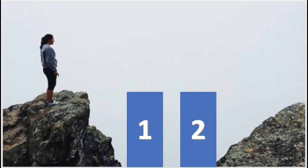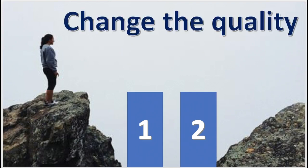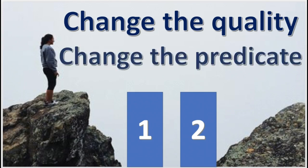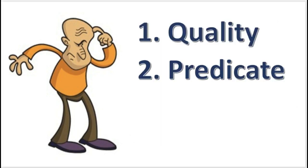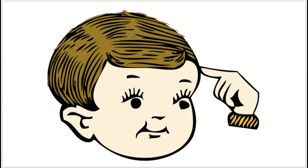There are two steps involved with obversion. One, change the quality, and two, replace the predicate term with its complement. Remember, we'll be changing the quality and the predicate. Now, do you remember what a qualifier is?